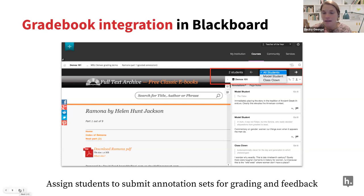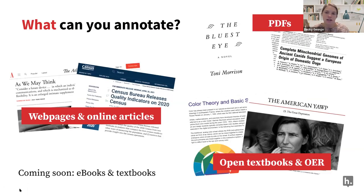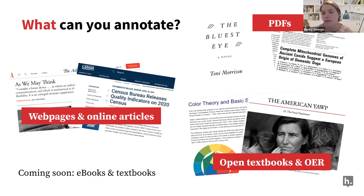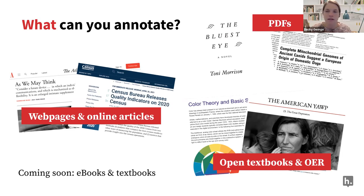Two things are frequently top of mind for those new to Hypothesis: what can you annotate, and what can be included in your annotations. You can annotate any publicly available websites or PDFs — publicly available means it can't be behind credentials or a paywall. If you get notifications that you've used up your free articles for the month on Wall Street Journal or New York Times, that is an example of a resource you can't use with Hypothesis. You could take those sorts of resources and turn them into a PDF, but you want to make sure you're abiding by copyright policies at your institution.